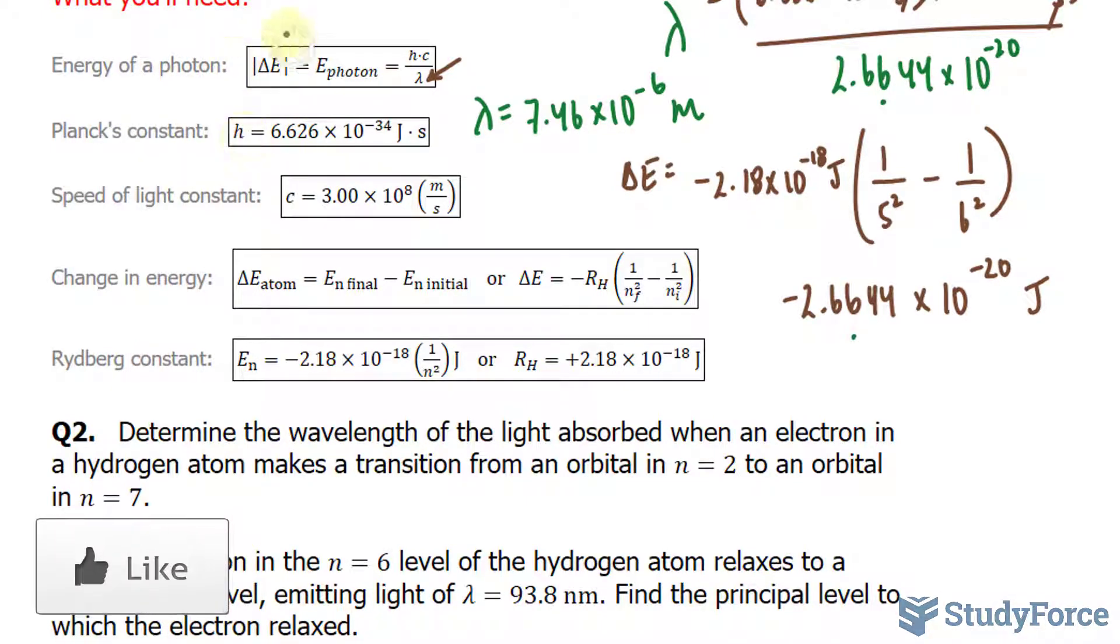And in order to find delta E, we can use one of two formulas. We can use this formula and use this constant, or we can use the Rydberg equation and this constant.